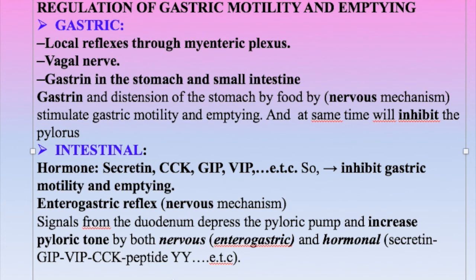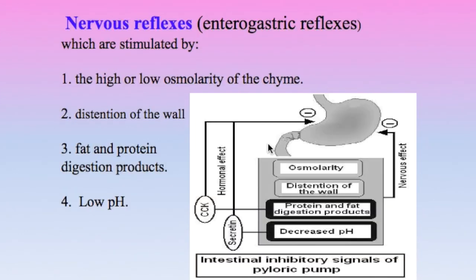The enterogastric reflex sends signals from the duodenum to depress the pyloric pump and increase pyloric tone, thus slowing gastric motility and emptying. This reflex is stimulated by high or low osmolarity of chyme, distension of the small intestine wall, presence of protein and fat digestion products, and low pH — all these factors stimulate the enterogastric reflex to inhibit gastric emptying and allow proper processing of food inside the small intestine.